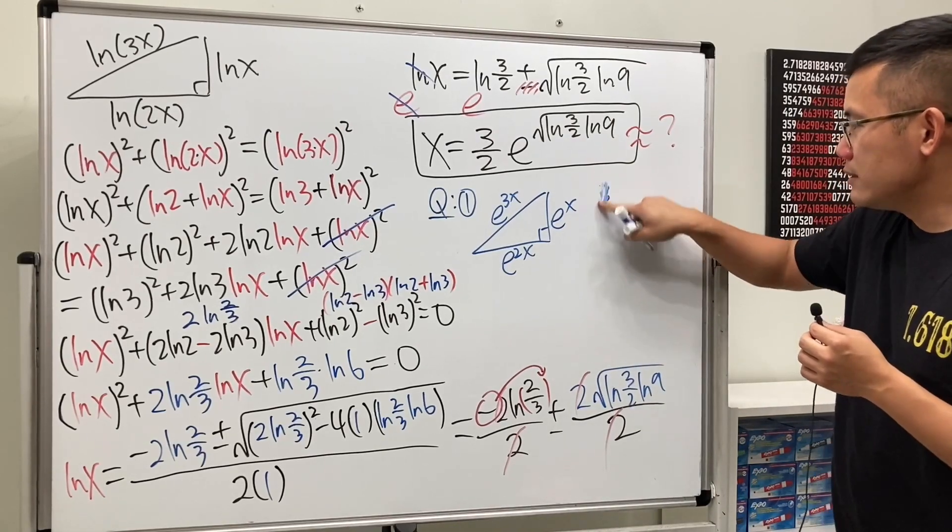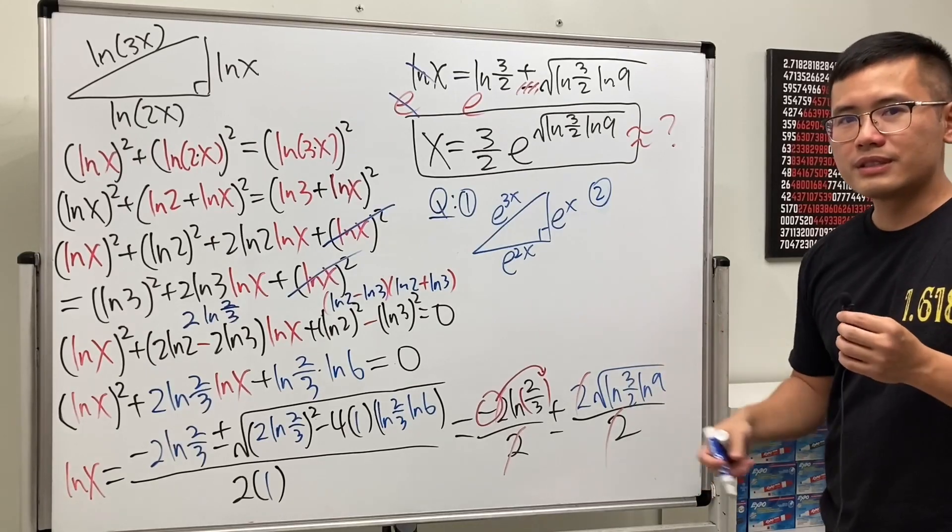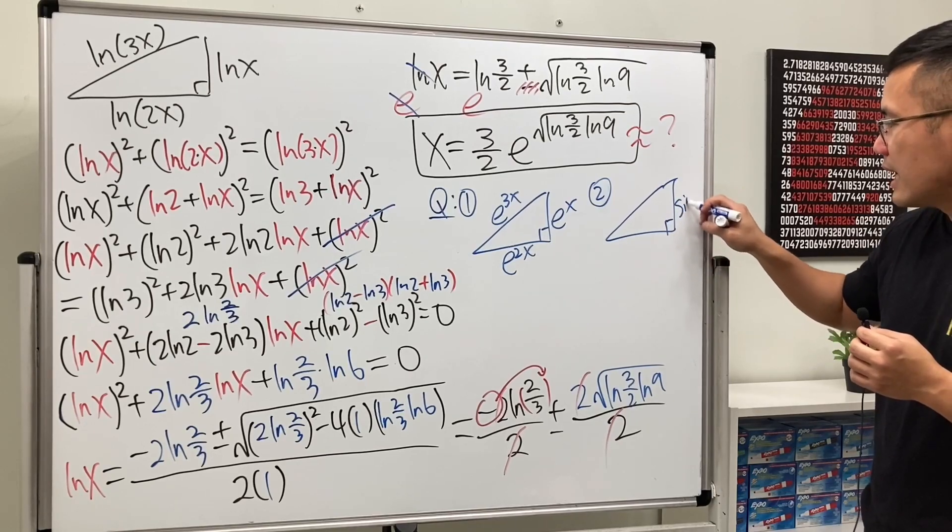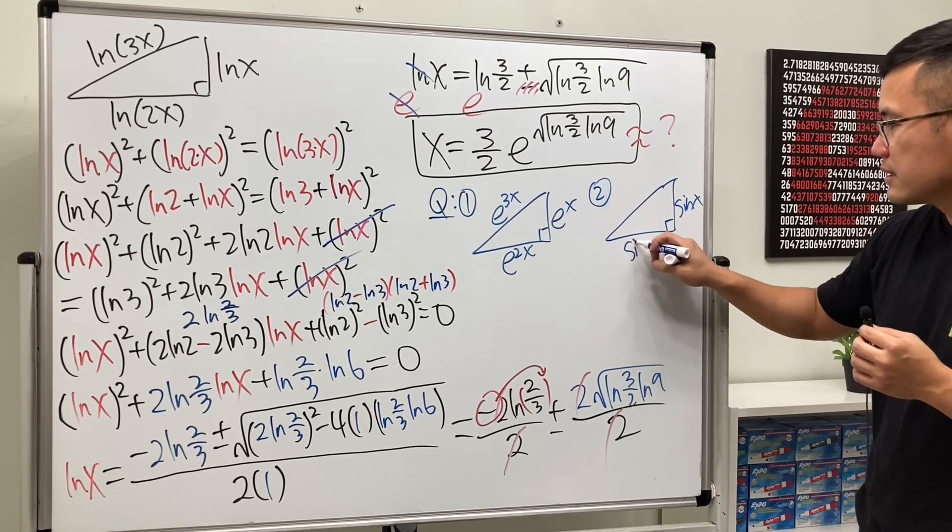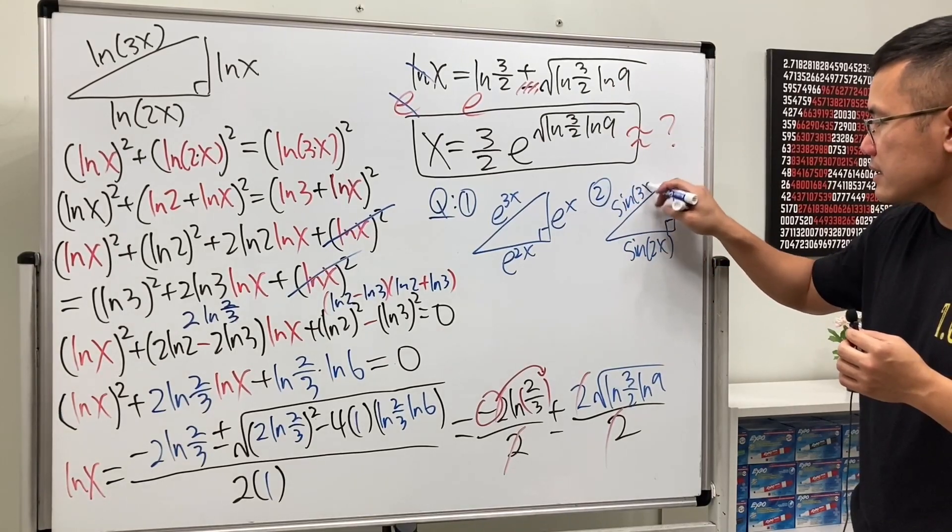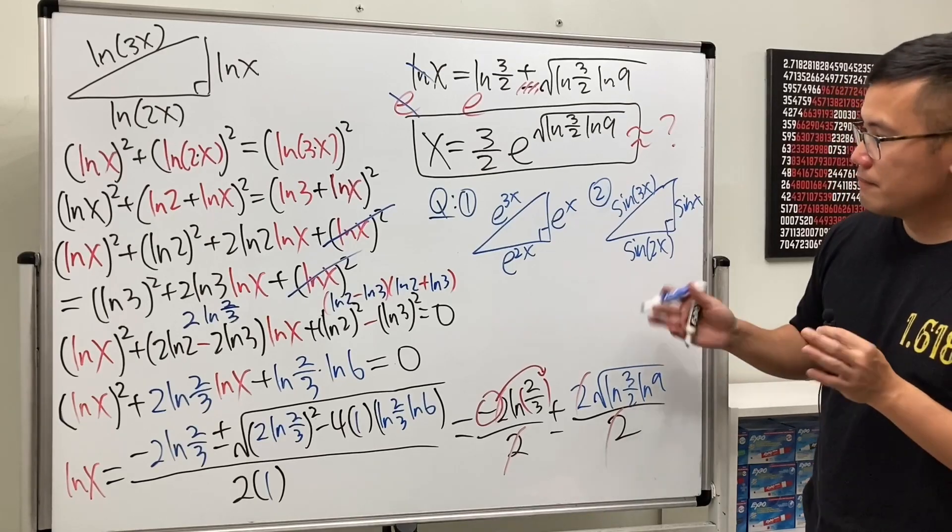I'll give you another one. We can also have sine and cosine. Let's put sine here. I'm just going to say we have sine of x, and let's say this is sine of 2x, and then sine of 3x. You will have to see if this is possible or not. That's pretty cool, huh?